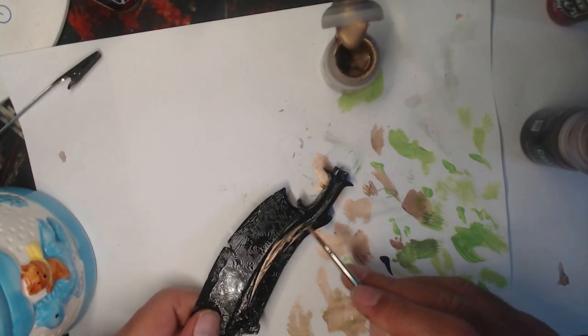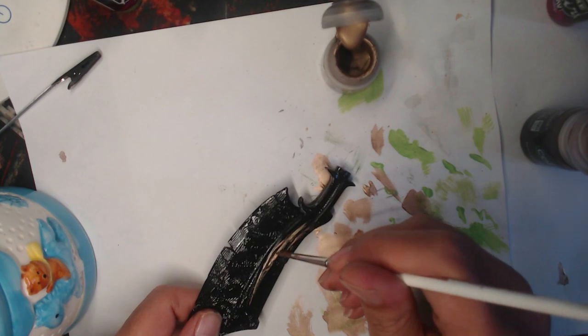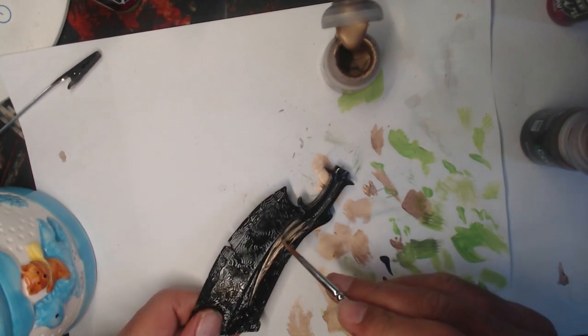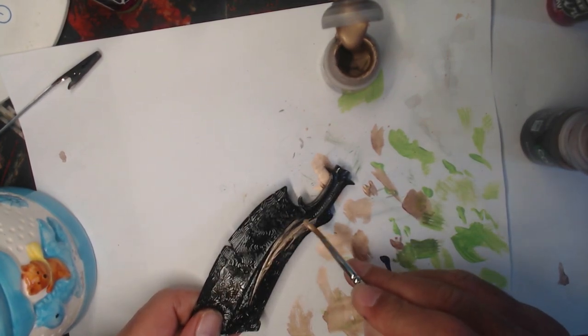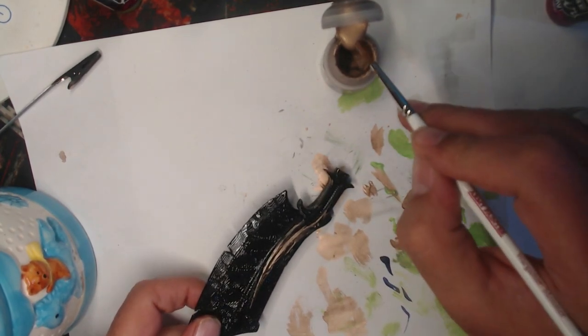Last thing to finish up is his sword. I started with his handguard and the spine of the sword. Again, using our bronze to highlight these areas, followed up with a Reikland Flesh Wash.